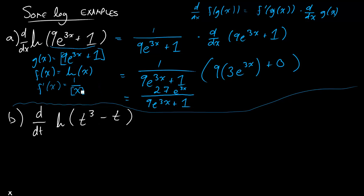This one is going to be a little bit easier. Same idea, though. So the inner function here is g of x is going to be t cubed minus t. My f of x, or I just cannot keep letters straight today, so g of t is going to be t cubed minus t.